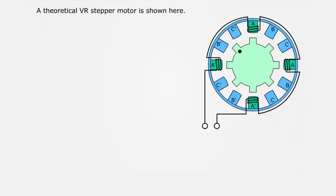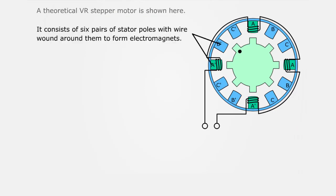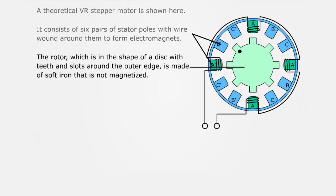A theoretical VR stepper motor is shown here. It consists of six pairs of stator poles with wire wound around them to form electromagnets. The rotor, which is in the shape of a disc with teeth and slots around the outer edge, is made of soft iron that is not magnetized.